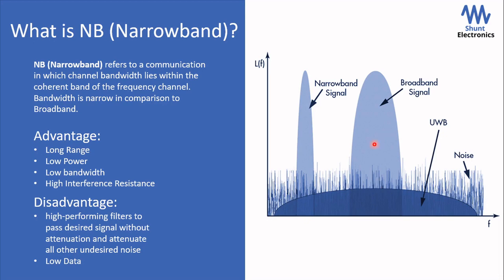If we need to send a string of data through broadband and wideband, the bandwidth of these channels goes unutilized, and we all know that bandwidth has a cost. The advantage of narrowband is: first, it has low bandwidth and hence can send a signal with low power over a long range; it also has high interference resistance. The disadvantage of narrowband is it requires high-performing filters to pass the desired signal without attenuation, and second, it can only send low data at a time.